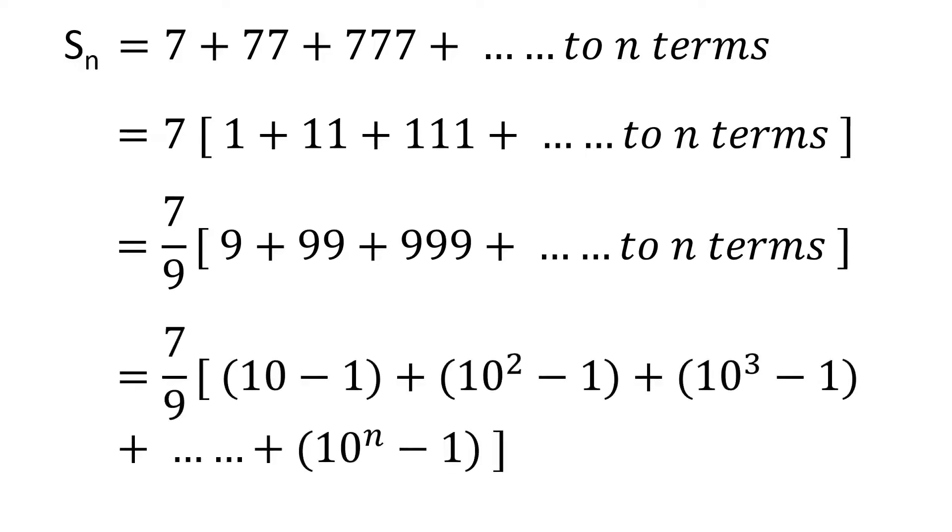Observe that the first term in the square brackets can be written as 10 minus 1, the second term can be written as 100, that is 10 square, minus 1. Similarly, we can write the third term as 1000, that is 10 cube, minus 1, and so on continuing up to nth term, we can write the nth term as 10 raised to the power n, minus 1.